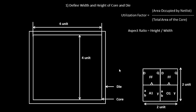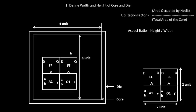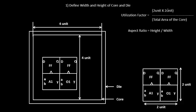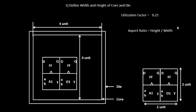We'll place our existing circuit onto this particular core. To calculate the utilization factor, we need the area occupied by the netlist, which is 2x2 units — that's 4 square units. The total area of the core is 4 cross 4, which is 16 square units.